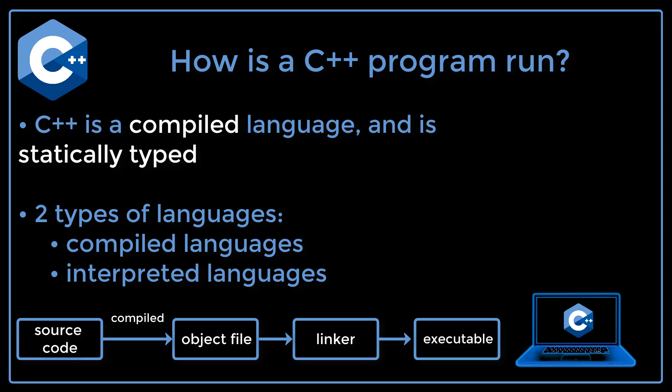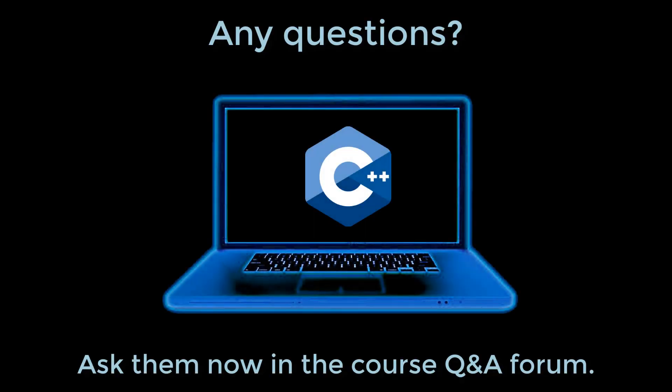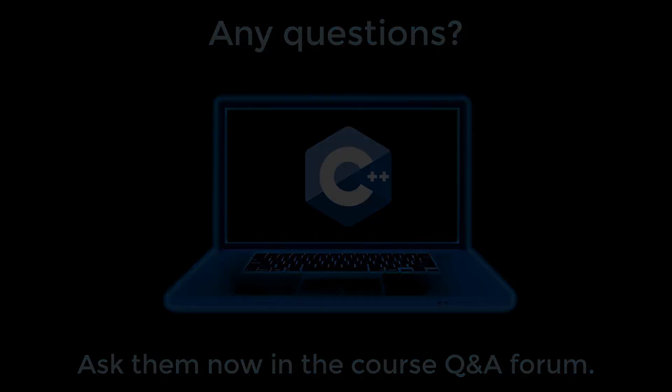Now let's understand what happens under the hood when a C++ program is run. The code that we are writing is referred to as source code. Each file of code that we write needs to get compiled, which means it gets translated into machine code — also known as an object file. Since a program usually consists of multiple files, each of these becomes a separate object file. The object files then get put through a linker, which combines them into a single executable file that can be run by the machine.